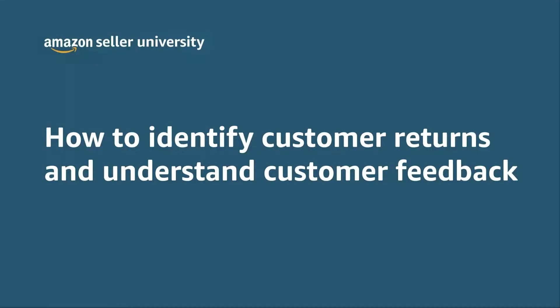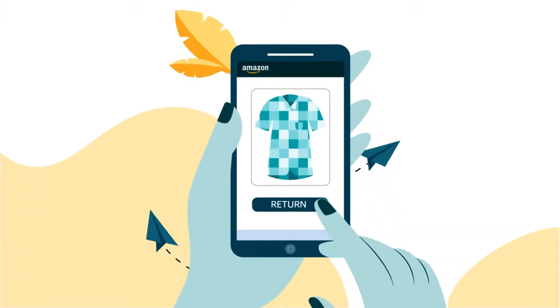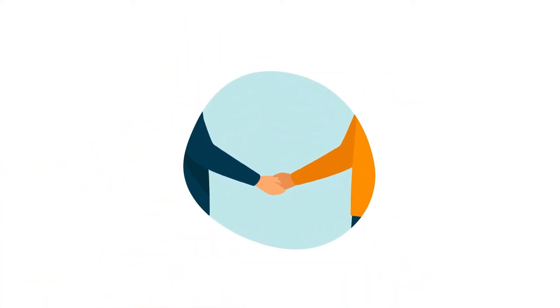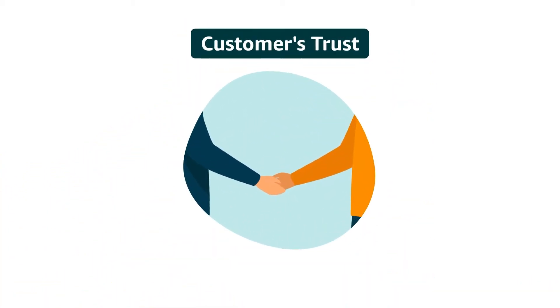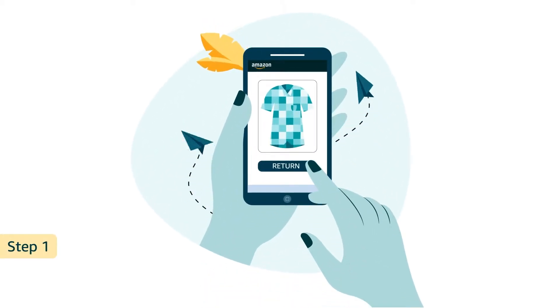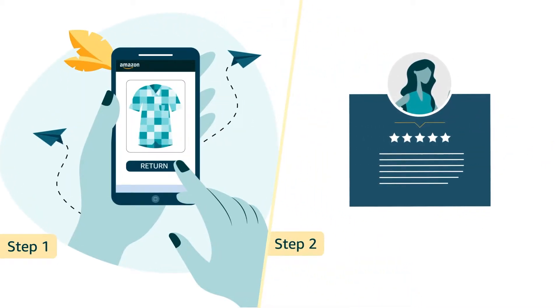Welcome to the video on how to identify customer returns and understand customer feedback. Product returns are an expected part of the customer experience and can have a significant impact on customers trusting you as an Amazon selling partner. There are two simple steps to follow: step one is identifying customer returns, and step two is checking feedback.